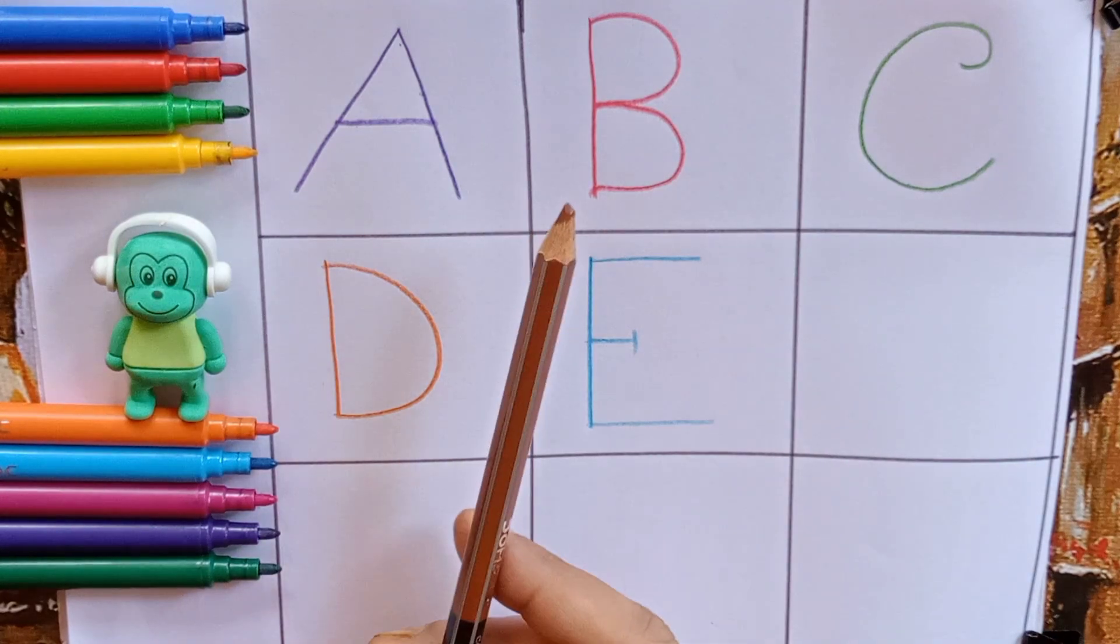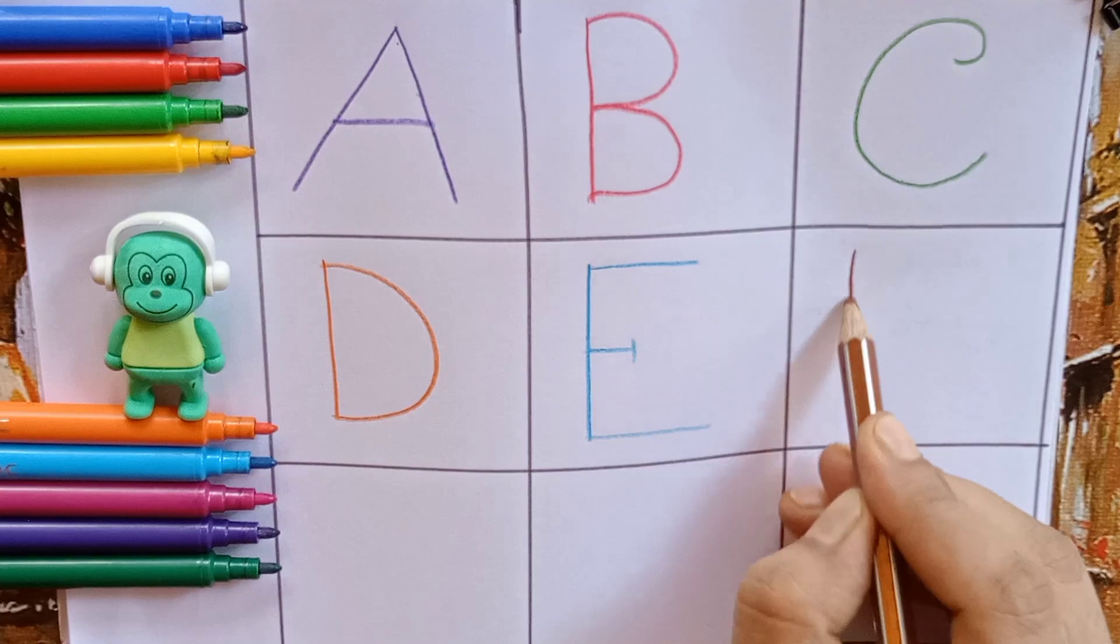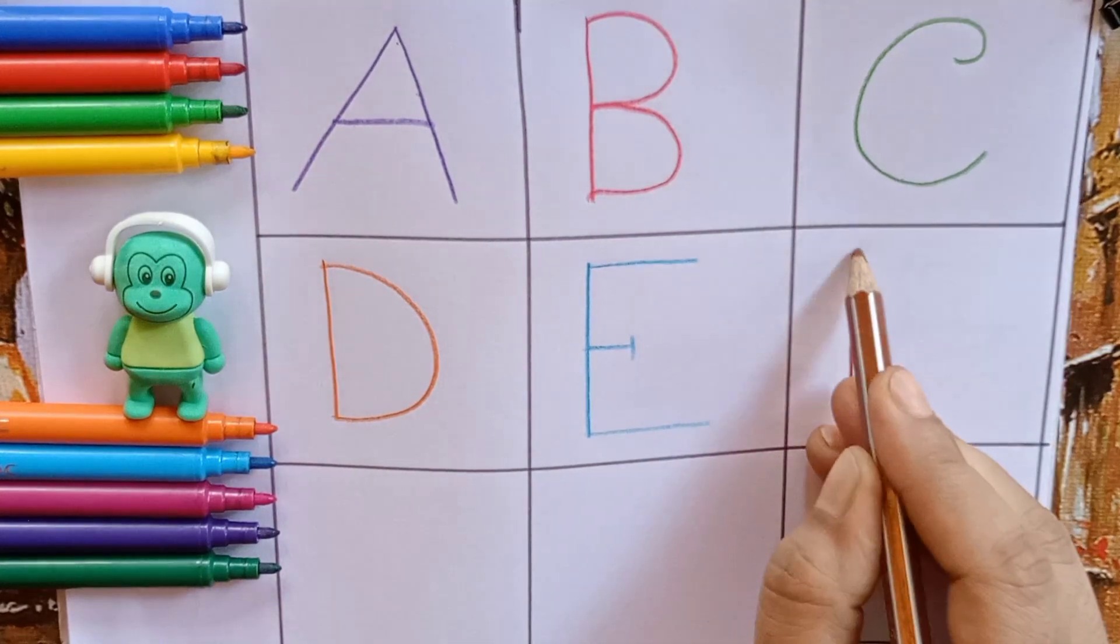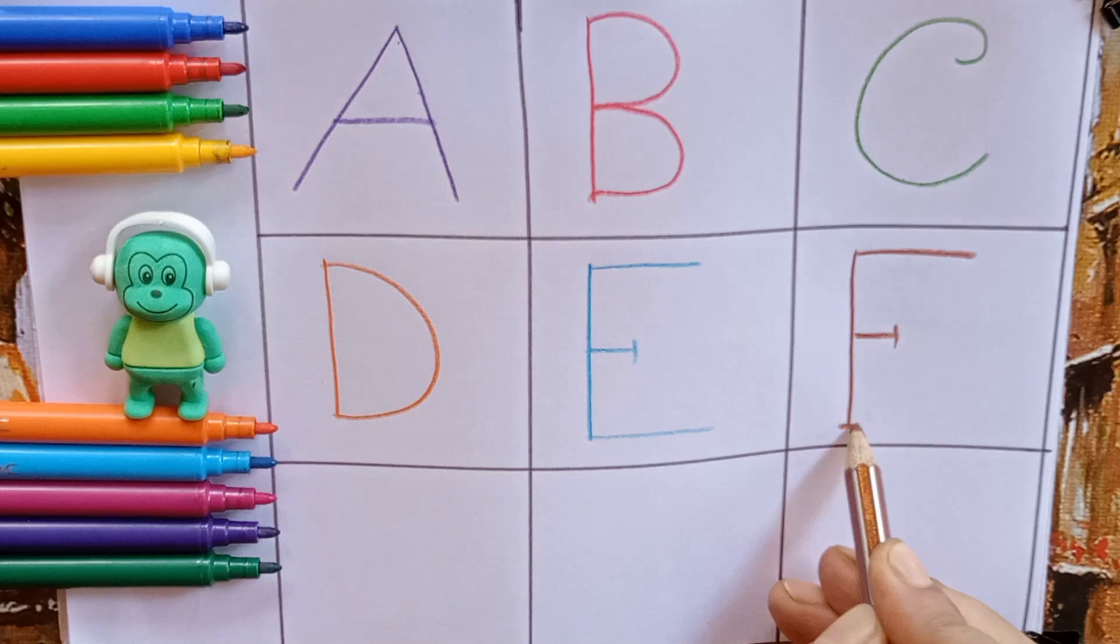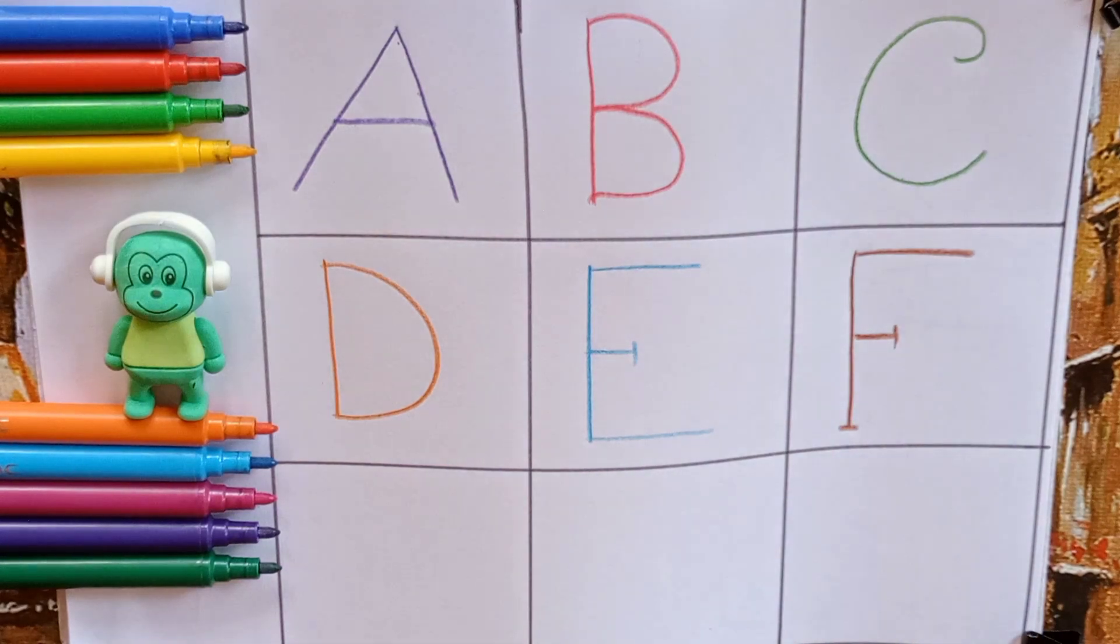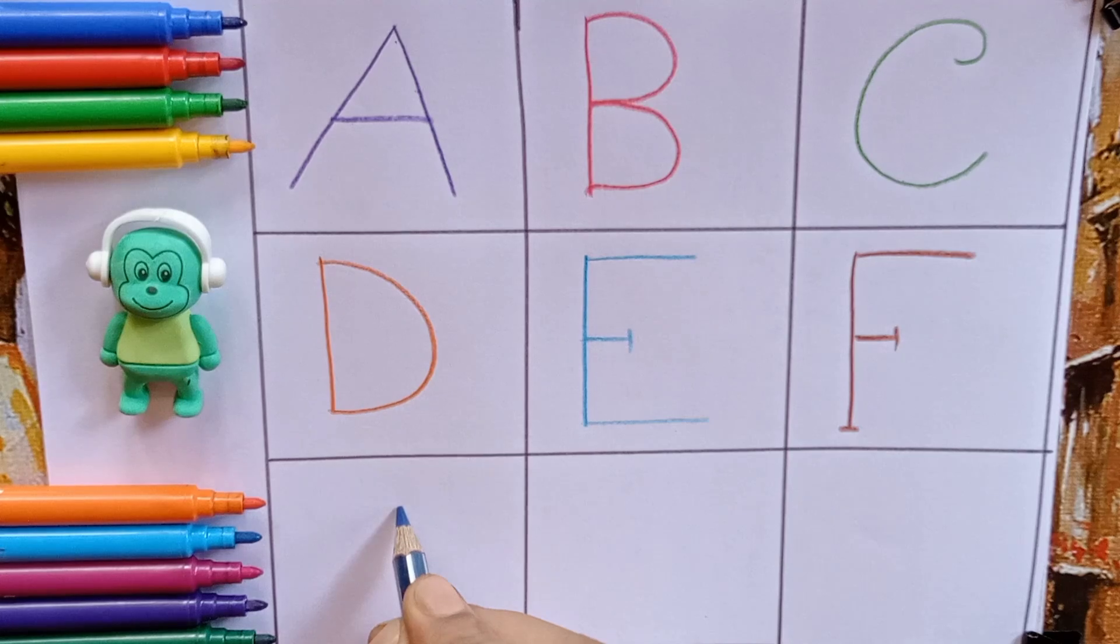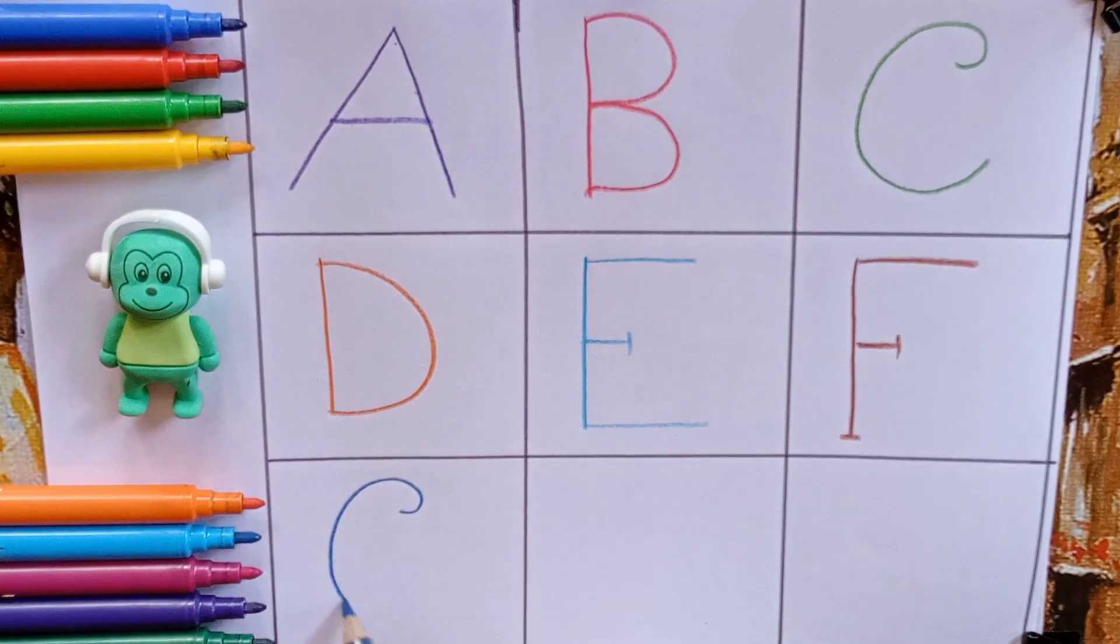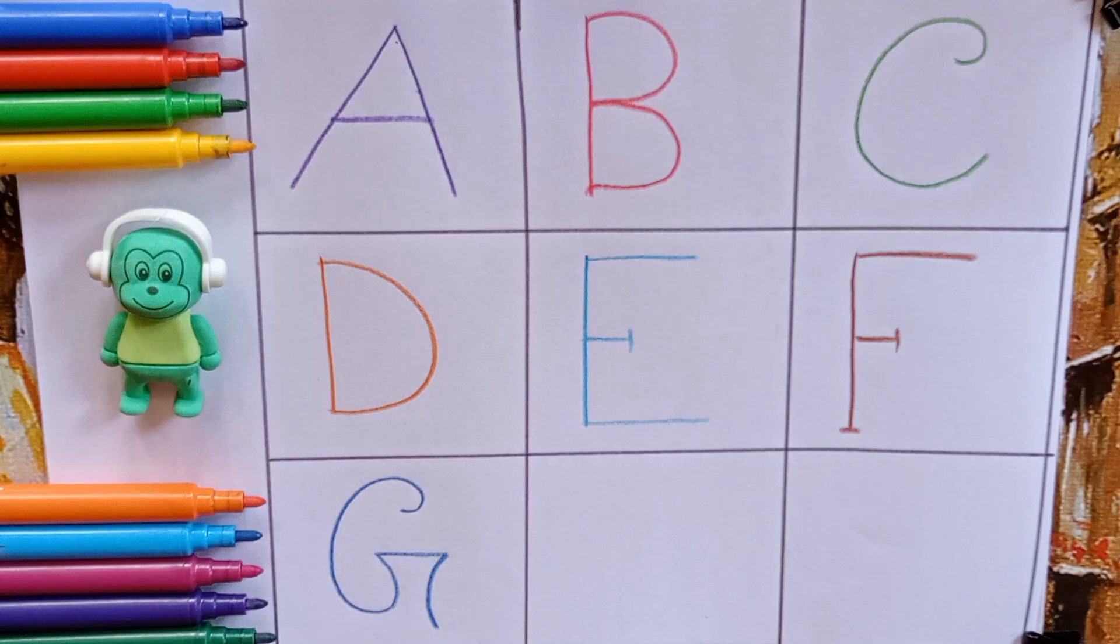Brown. F. F for fig. Fig is a fruit. Blue. G. G for gorilla. Gorilla is an animal. G.